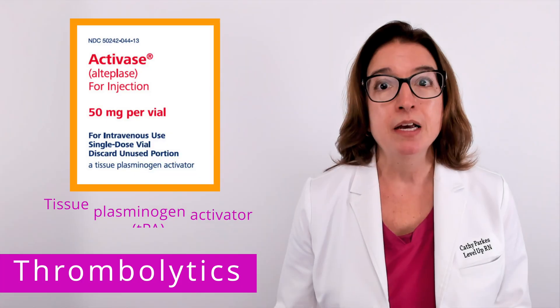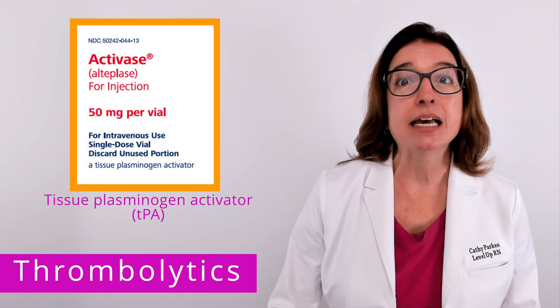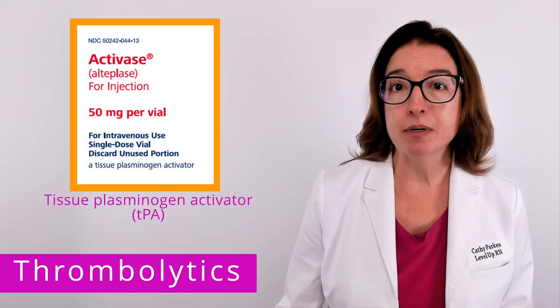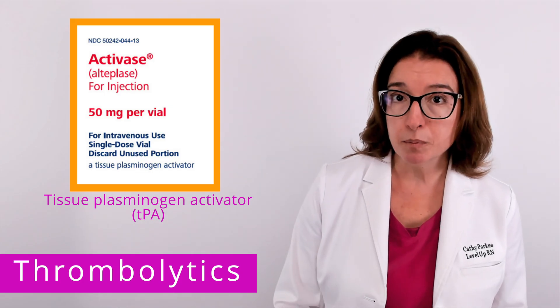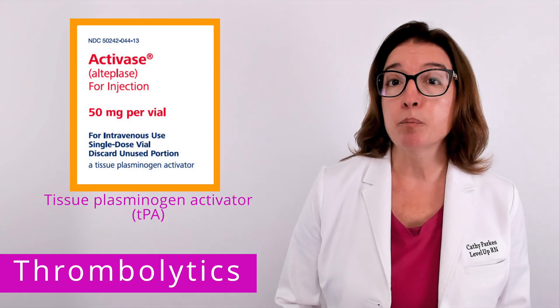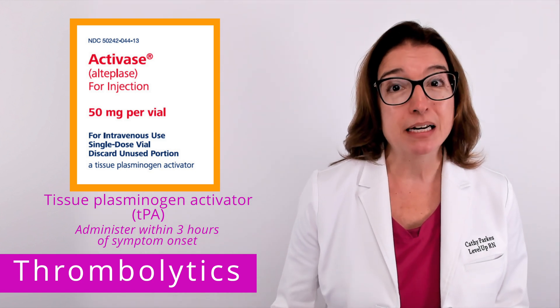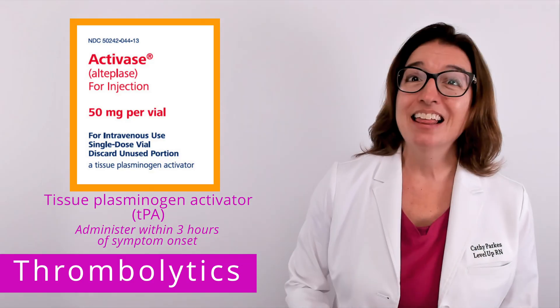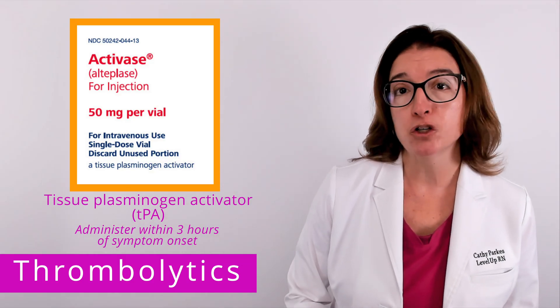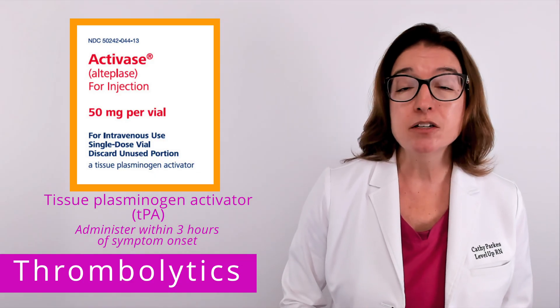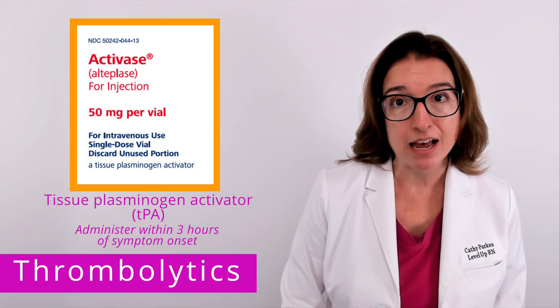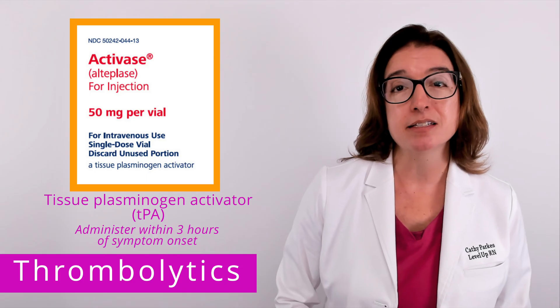Now let's talk about nursing care interventions. One super important thing to know for nursing school and your nursing practice is the timing of administration of a thrombolytic agent in the treatment of an ischemic stroke. TPA, which stands for tissue plasminogen activator, is a type of thrombolytic agent used to treat an ischemic stroke. The most common TPA used is alteplase, brand name Activase. The FDA has approved the use of TPA within three hours of symptom onset of an ischemic stroke, so administration of this medication is critical within that time window. That said, several major professional organizations such as the American Heart Association endorse administration of TPA up to four and a half hours after symptom onset, though administration after three hours is considered off-label.